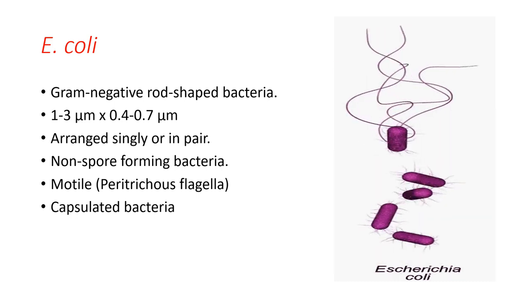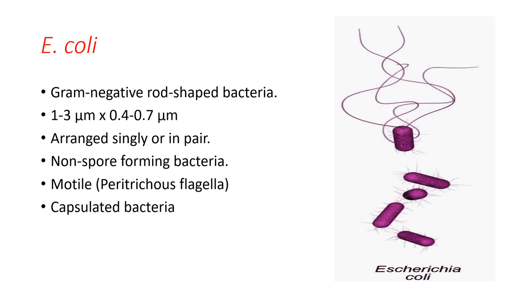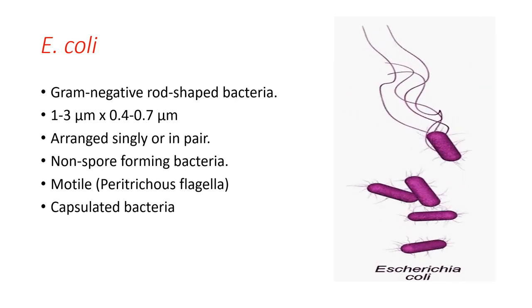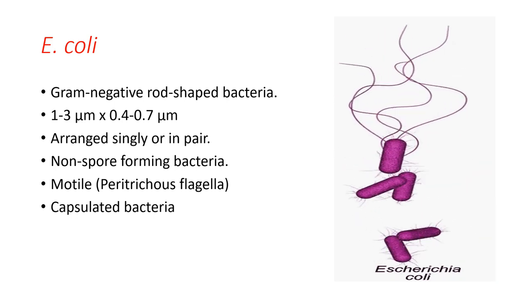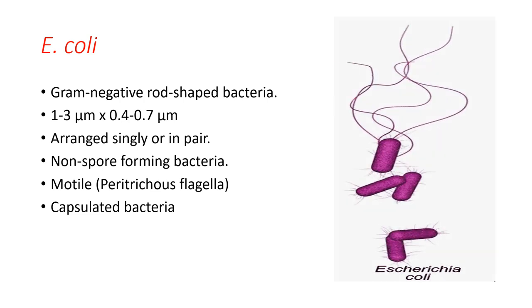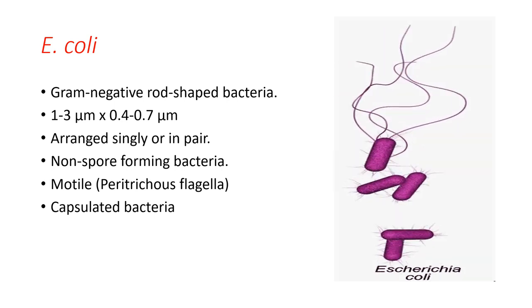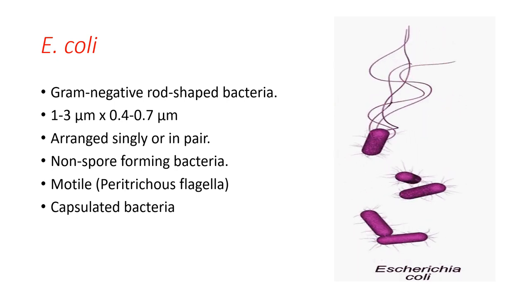E. coli is a non-spore former. Spores are the outermost protective layer that protects bacteria from unfavorable conditions such as high temperature and high pH. Bacteria can form a hard substance over themselves called a spore. Spore-forming bacteria include Bacillus and Clostridium, but E. coli is not a spore-forming bacteria. Spore-forming bacteria are harder to kill because they can survive in unfavorable conditions.